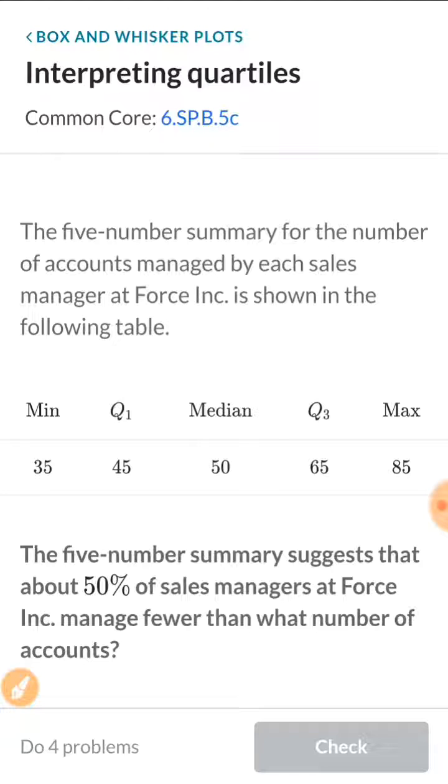So here we see that you have the minimum, which is 35, Q1, which is 45, the median is at 50, Q3 is at 65, and the max is 85.